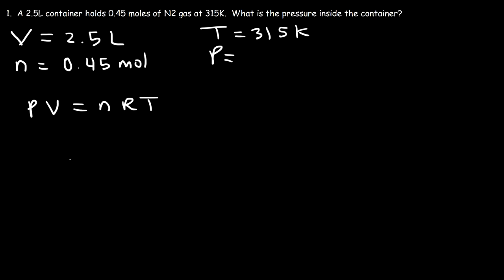Our goal is to calculate P. V is 2.5, n is 0.45, and R is 0.08206, and the temperature is 315. So let's multiply 0.45 times 0.08206 times 315.